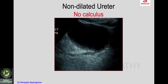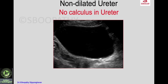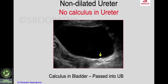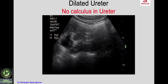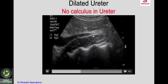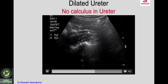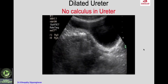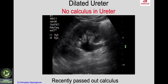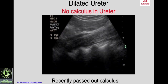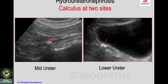In the same clinical scenario with non-dilated ureter and no calculus: you may see edema of the ureterovesical junction confirming a recently passed-out calculus. Or you may see no calculus in the ureter but a small calculus in the urinary bladder — the calculus has escaped from the ureter into the bladder and the patient will pass it during the next micturition. Another possibility: dilated collecting system, dilated upper and mid ureter, dilated lower ureter, but no calculus found — the calculus is recently passed out and the dilatation has not yet collapsed — residual dilatation.